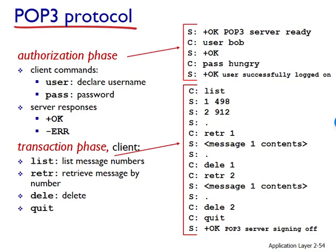POP3 is an extremely simple mail access protocol, and because it is so simple, its functionality is pretty limited. POP3 begins when the user agent opens a TCP connection to the mail server on port 110. We keep encountering different port numbers — HTTP uses port 80, FTP uses port 20, and now POP3 uses port 110. These are different connections on a physical device that direct messages to the appropriate server.